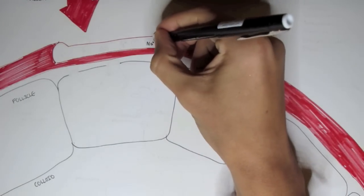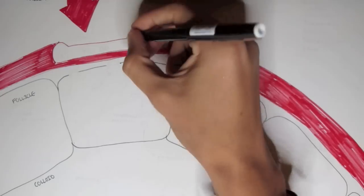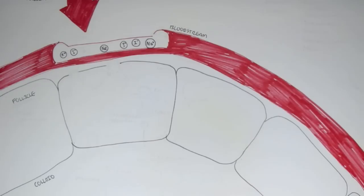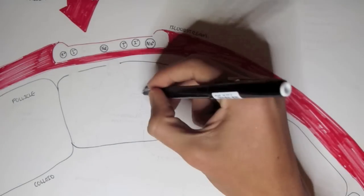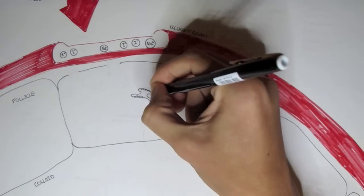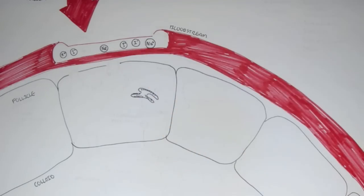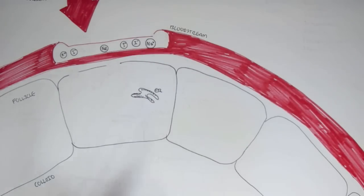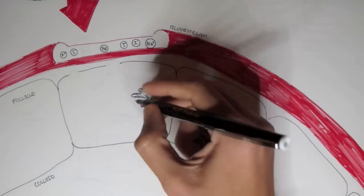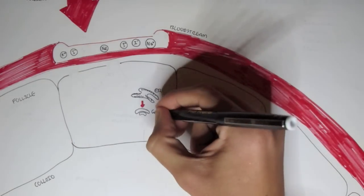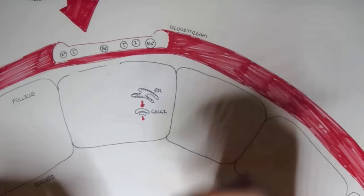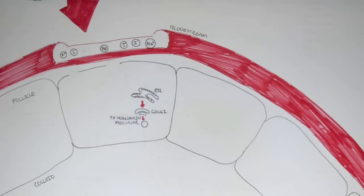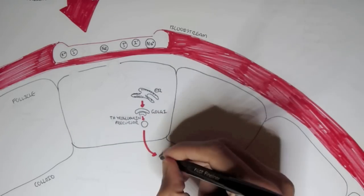There are many cations and anions in the bloodstream, such as sodium, iodide, and potassium, amongst many other things. Inside the follicular cells we have endoplasmic reticula which synthesize thyroglobulin. These thyroglobulin molecules get packaged up by the Golgi apparatus and sent into the colloid as thyroglobulin precursors.